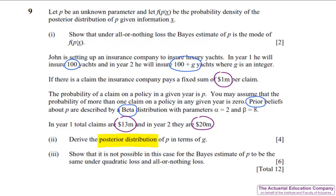You could either bundle these together and say there's 33 claims out of 200 plus G yachts or trials. Or you could calculate these two probabilities separately, where P is the probability of a claim. So for example, for the 100 yachts, we have 13 claims. And so that must be 87 yachts with no claims. And here's all the different combinations. And you can do a similar thing for the second year. For part 3, you're going to calculate the Bayesian estimate under quadratic loss, i.e. the mean, and all or nothing loss, i.e. the mode, and show that they can't be the same. This would have been fairly standard stuff.